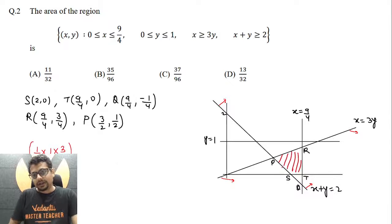So area of triangle P, Q, R minus area of triangle Q, S, T. So half times—here Q has y coordinate minus 1 by 4, so Q, T length becomes 1 by 4. And S, T is basically 9 by 4 minus 2, which is 1 by 4.